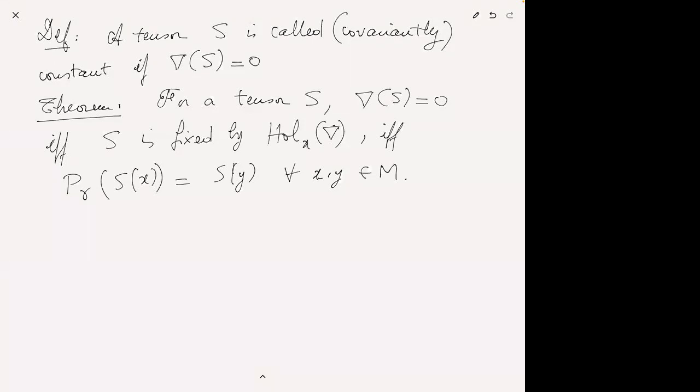We're done with basic definitions. Now let's get closer to our classification. We want to classify Riemannian manifolds so that hyperkähler manifolds naturally drop out as one of the big classes. We do the classification using the holonomy intrinsically related to our Riemannian manifold. A Riemannian manifold has a canonical connection on its tangent bundle called the Levi-Civita connection, and we'll use that connection's holonomy to classify.